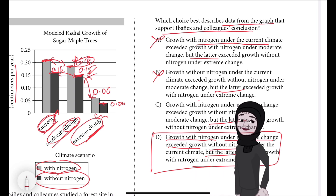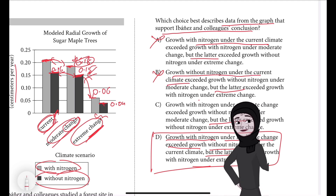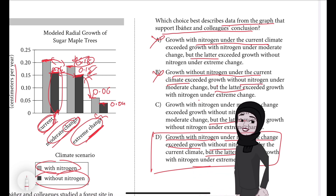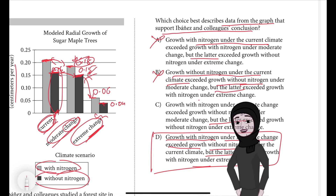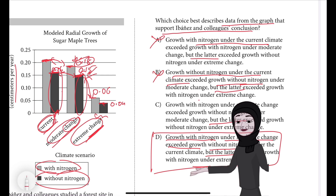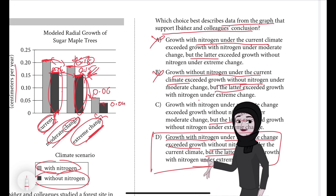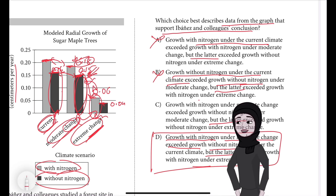Choice B is incorrect. Although it accurately represents data in the graph, this fact pattern doesn't support Ebanes and colleagues' conclusion that the decline in radial growth due to climate change will be partly offset by higher levels of atmospheric nitrogen. It compares growth without nitrogen under current climate with growth without nitrogen under moderate change — around 0.16 versus 0.15 — and then the latter exceeded growth with nitrogen under extreme change, which is not what the researchers need.